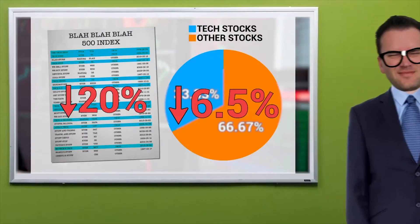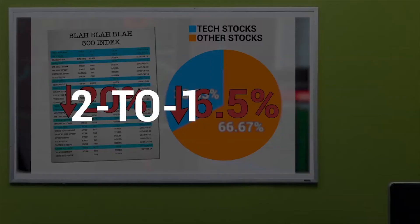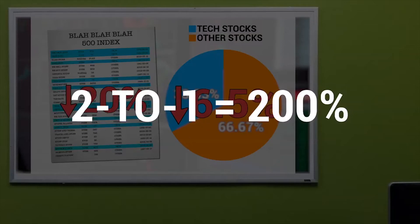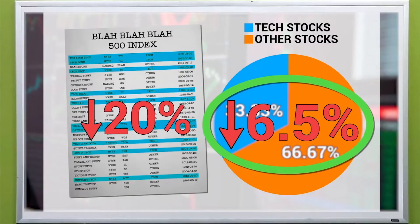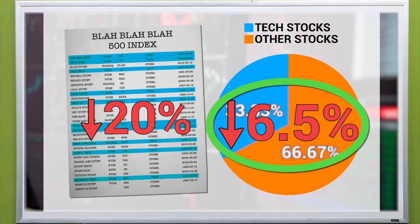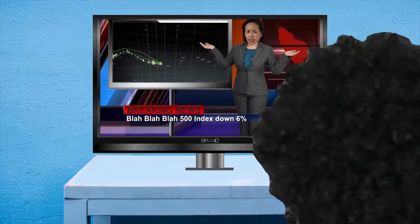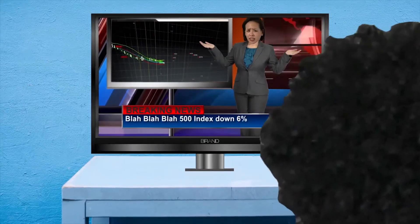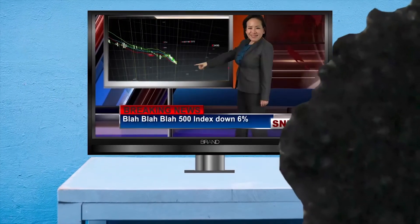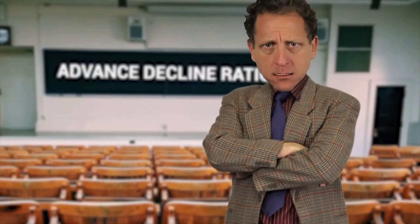So if you were savvy, you'd think it really odd to have an advance decline ratio at 200% — i.e., well above 1 — in a market that was down a massive 6% that day. Something would not be adding up in your brain, and you'd know not to just trust the index number you heard on the news to reflect what actually happened with market conditions that day. That's why you'd take a very hard look at the advance decline ratio as kind of a delimiter or truing algorithm in all this.